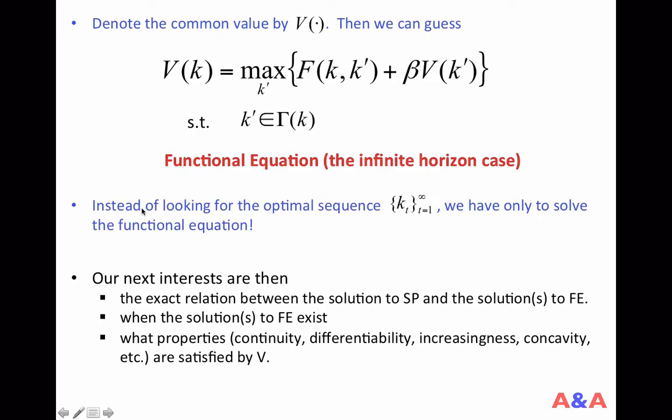So, instead of looking for the optimal sequence of K's, we have only to solve the functional equation. Once we understand the functional equation, our next interest would be the exact relation between the solution to the original sequential problem and the solution to the functional equation, and when the solution to the functional equation exists.